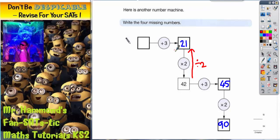The opposite of add 3 to get back to the mystery box is subtract 3. So 21 subtract 3 is 18. The very first mystery box has to contain 18. And there you have it - that's all the mystery boxes filled in.